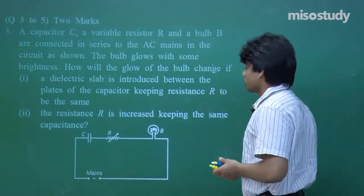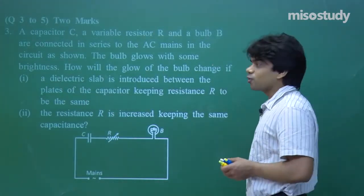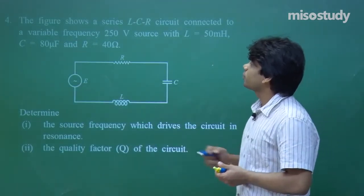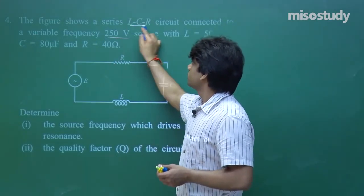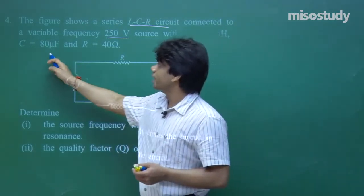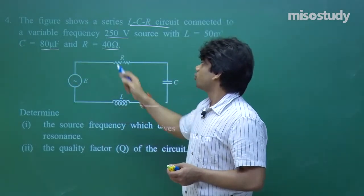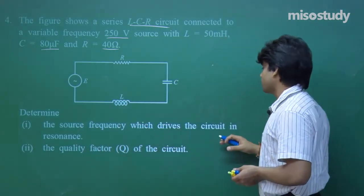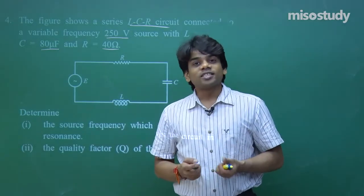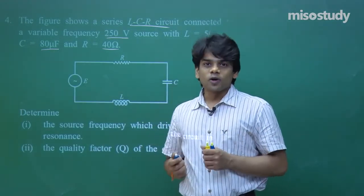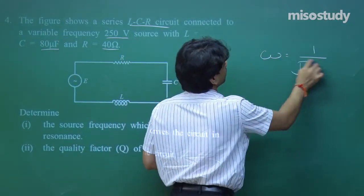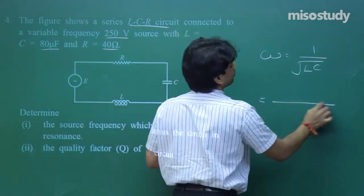Two-mark question, easy question. You should have an idea how to do such questions. The next question: a series LCR circuit is connected to a variable frequency 250-volt source with L = 50 millihenry, C = 80 microfarad, R = 40 ohm. Determine the source frequency which drives the circuit in resonance.